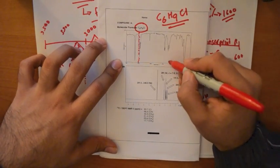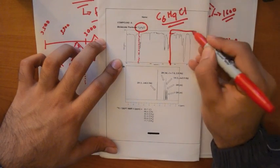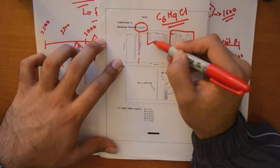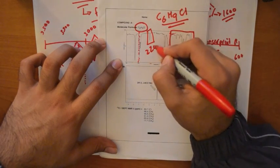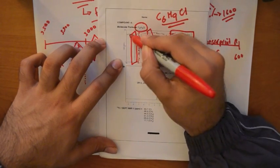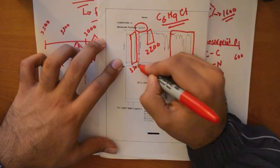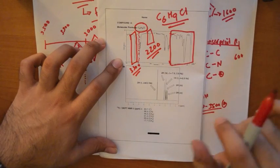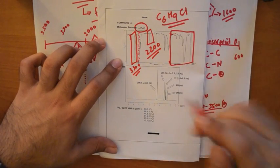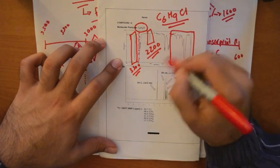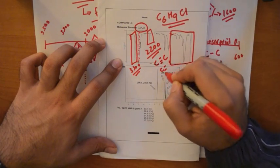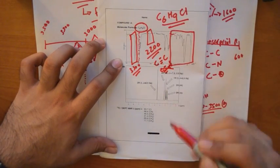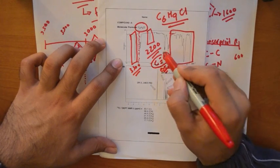And then the fingerprint region here, again, not much information can be deduced from there. Another important one is this stretch here, which is around 2200. And another one, which is around 3300. So what two functional groups were around 2200? Think about it. Okay, so two of them were C triple bond C and C triple bond N. Since there's no N in your molecular formula, we cross that out and we know there's a C triple bond C.